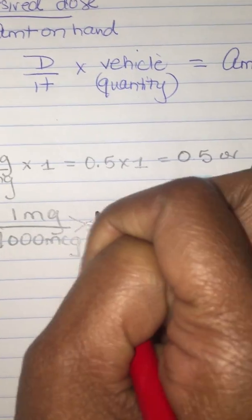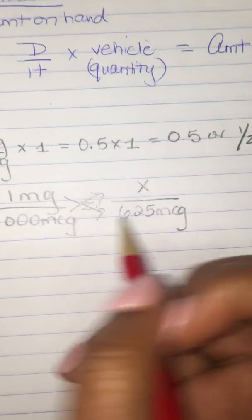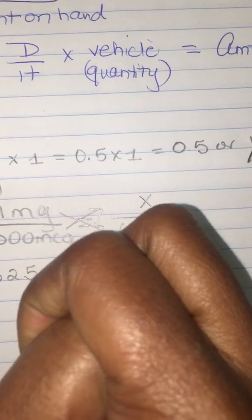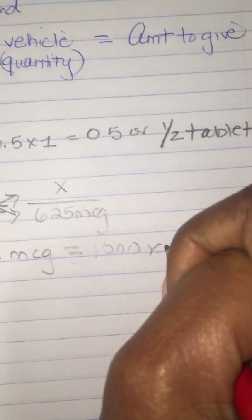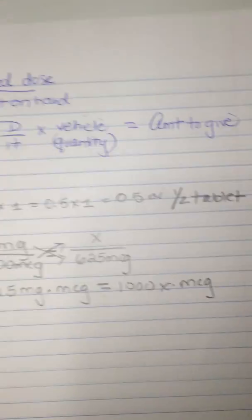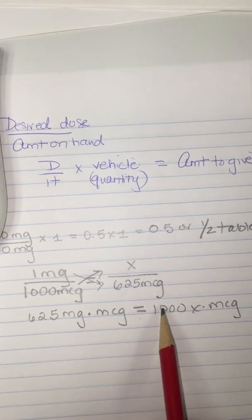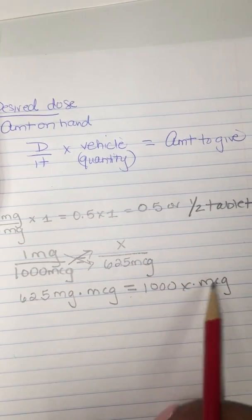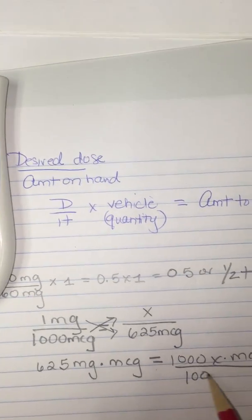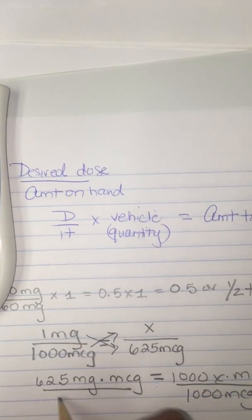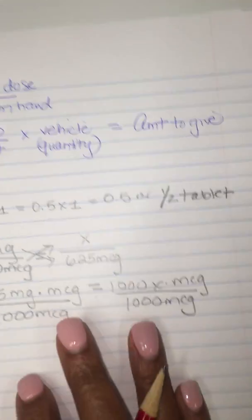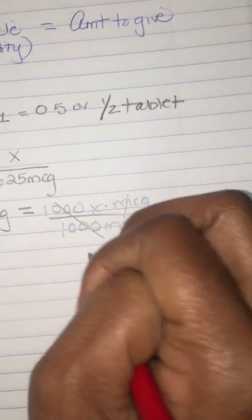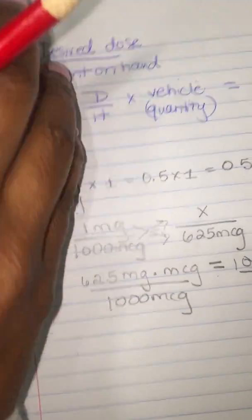One times 625 is 625 micrograms. You always put everything. 1,000 times X is 1,000X. I want X to be all by itself, so I'm going to get rid of the coefficient, get rid of 1,000 micrograms. This will cancel, leave me with X, and that's what I wanted. These micrograms will cancel out.